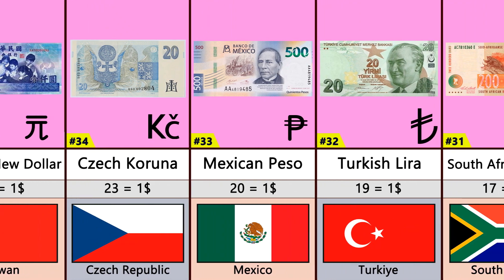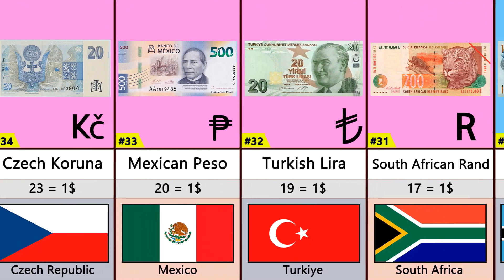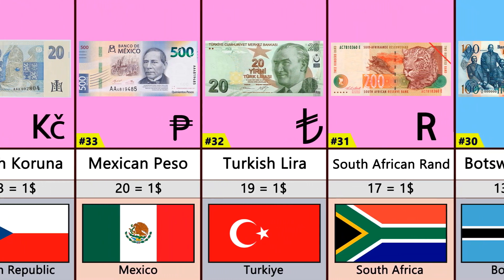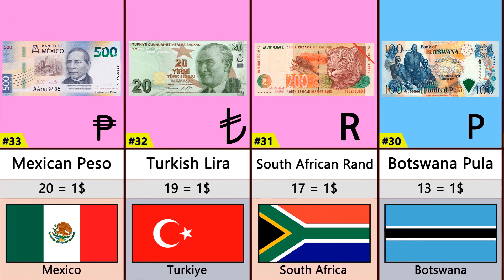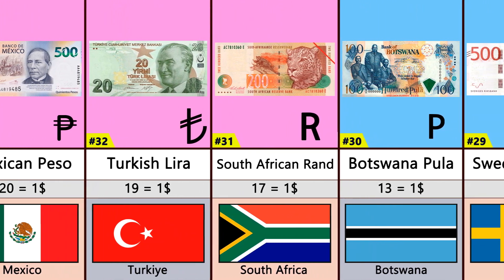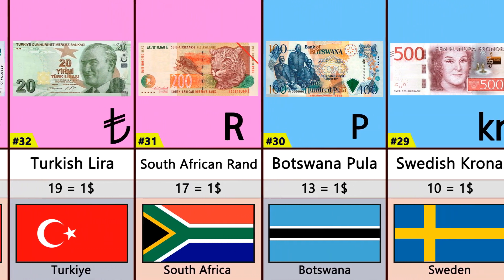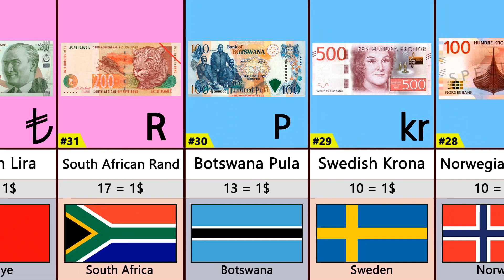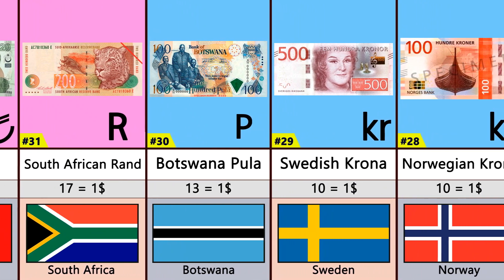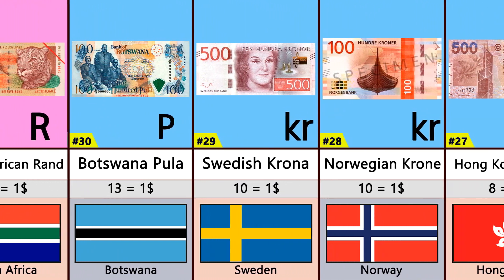Number 31: South African Rand. Number 30: Botswana Pula. Number 29: Swedish Krona. Number 28: Norwegian Krone. Number 27: Hong Kong Dollar.